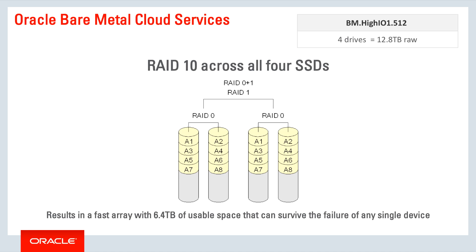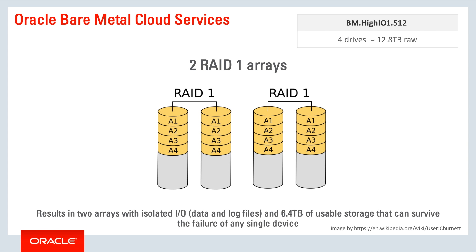A RAID 10 results in a fast array with 6.4 terabytes of usable space that can survive the failure of any single device and may survive the failure of two devices. Another option on the High I/O instances is two RAID 1 arrays. With two RAID 1 arrays, you get isolated I/O — for example, one LUN for your data and another for your log files — with 6.4 terabytes of usable storage that can survive the failure of any single device and may survive the failure of two.